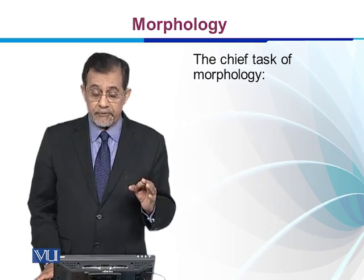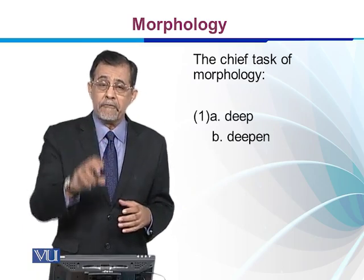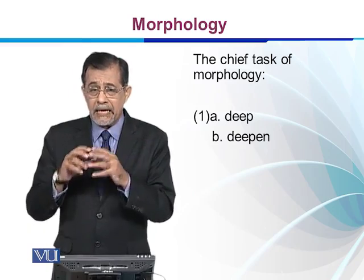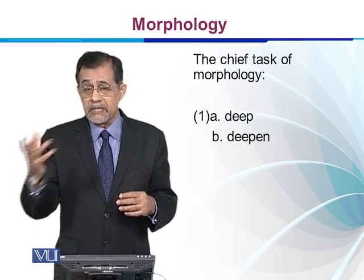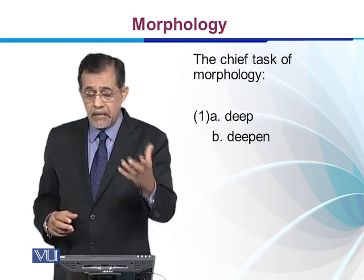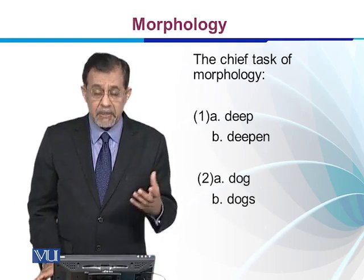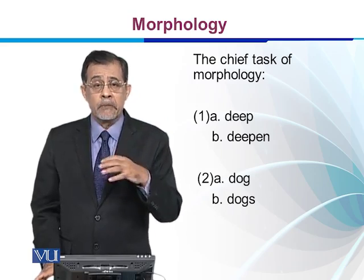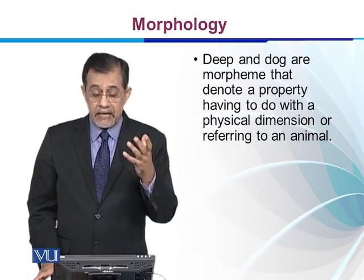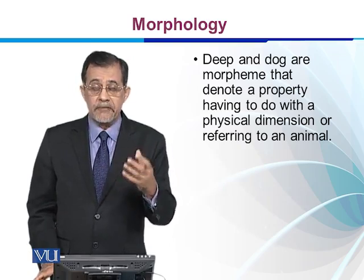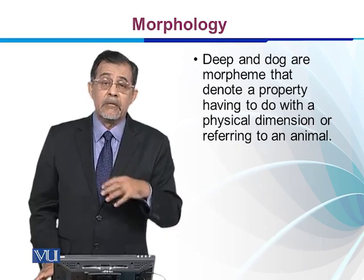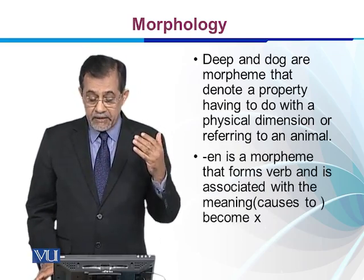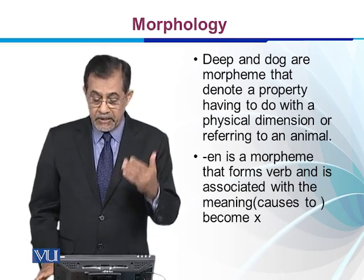The chief task of Morphology is to look at how words are formed. For example, deep refers to a certain dimension, and deepen — when we add -en to it — makes a verb from an adjective. Similarly, dog refers to a single animal, but when we add -s it becomes dogs, referring to many. So -en is a morpheme that forms a verb and is associated with the meaning 'cause to become X.' And -s is a morpheme that makes the word dog plural.